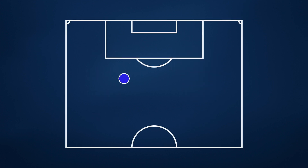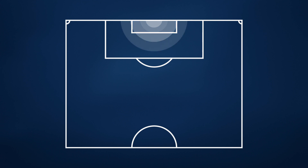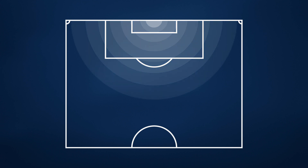Our model uses a huge amount of data to work out how often we would expect a certain attempt on goal to end up in the back of the net. Shot location is one of the major data points when calculating how likely it is that a goal is scored. It's not rocket science, is it? You have a better chance of scoring from inside the six-yard box than from the halfway line.